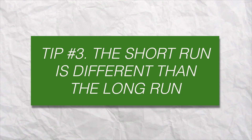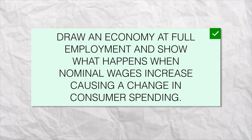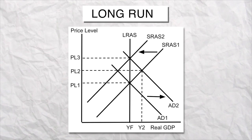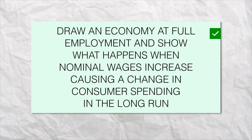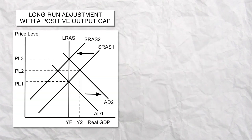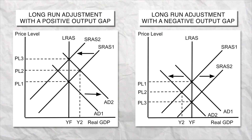Tip number three: the short run is different than the long run. Even though we reworded the question, it's still not telling us if they want the short run or the long run. In the short run, aggregate demand goes up, so the price level and the real GDP increase. But if the question is talking about the long run, the price level goes up but the real GDP stays the same — this is the idea of long run self-adjustment. If there's a positive output gap, eventually wages and resource prices will increase, so the short run aggregate supply shifts to the left. And if there's a negative output gap, eventually wages and resource prices will fall, so the short run aggregate supply will shift to the right. So to get the question right, you have to know if they're talking about the short run or the long run.